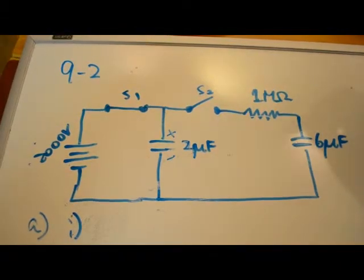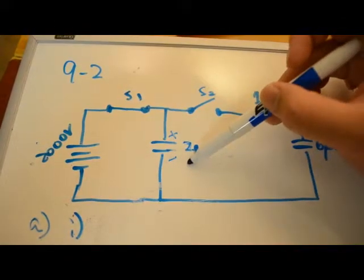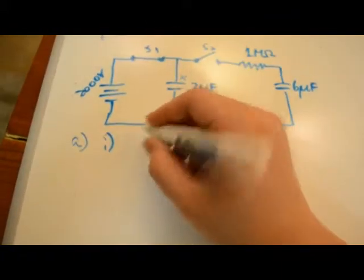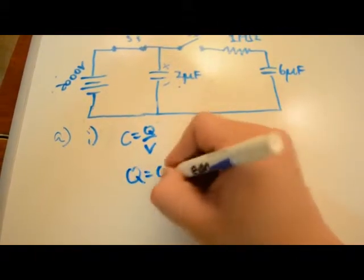The first part of the question asks you to solve for the charge on each plate of the capacitor. We can use the equation C equals Q over V, so Q equals C times V.